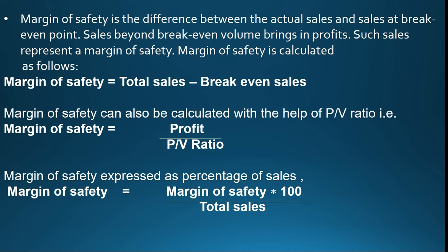Next is Margin of Safety. Margin of Safety is the difference between actual sales and sales at break-even point. Sales beyond the break-even volume bring in profit — such sales represent the margin of safety. In simple terms, margin of safety is the sales beyond the break-even point. The formula is: Margin of Safety = Total Sales minus Break-Even Sales. Margin of Safety can also be calculated with the help of PV Ratio: Margin of Safety = Profit divided by PV Ratio.